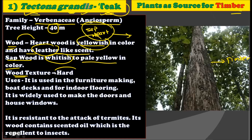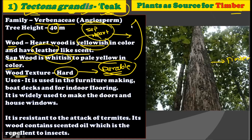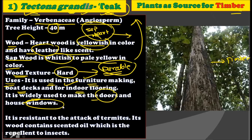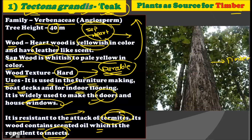The wood texture of Tectona grandis is very hard, and that is why this wood is very durable. The timber from Tectona grandis is used in furniture making, board and text making, indoor flooring, and to make doors and house windows. It is resistant to the attack of termites, as its wood contains a scented oil which is naturally repellent to insects — this is a great advantage of teak.